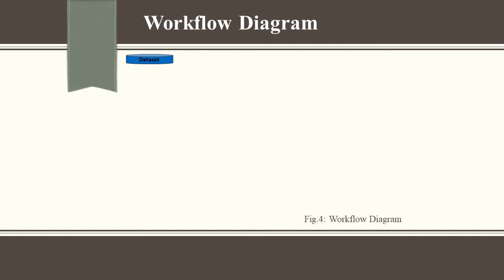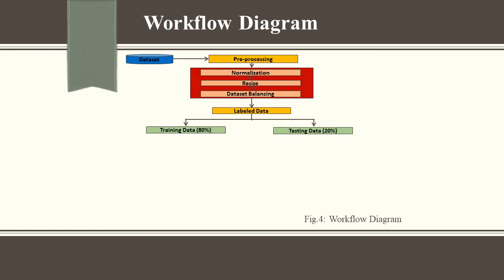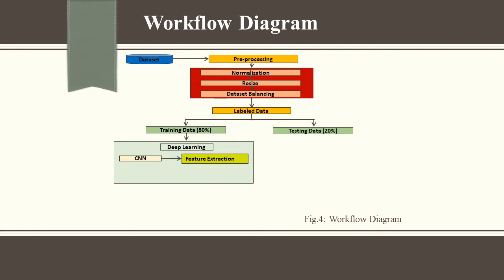In this thesis work, first we pre-processed the dataset. Then we normalized the dataset and resized all the data. Then we divided the labeled data into two parts: a training part and a testing part. 80% of images of the dataset are used to train the model and 20% are used to test the model. Then we extracted the features of the images by applying the proposed model in a convolutional neural network and predicted in the dense layer.